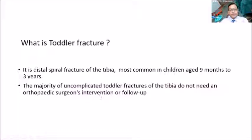There is a special fracture called the toddler fracture, which occurs in very young children from nine months to three years of age. It is a spiral fracture of the tibia in its distal part. Most go unnoticed — these toddlers refuse to walk and then start walking after some time. When x-rays are done, there is callus formation, and from hindsight you can see the fracture.